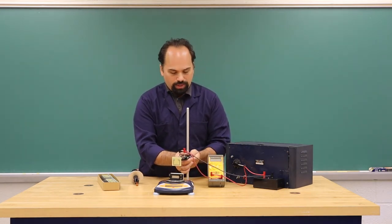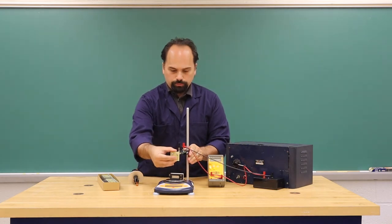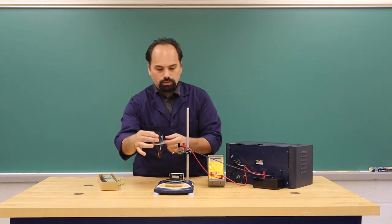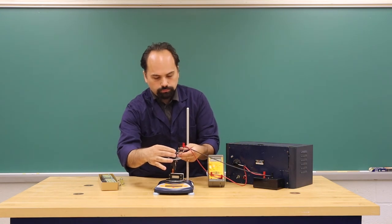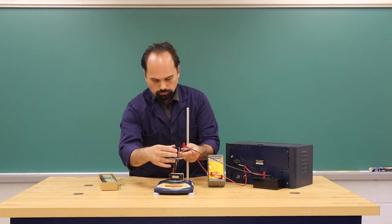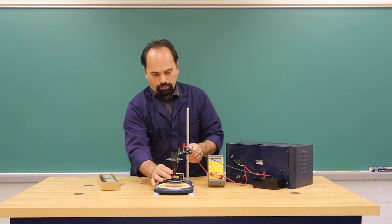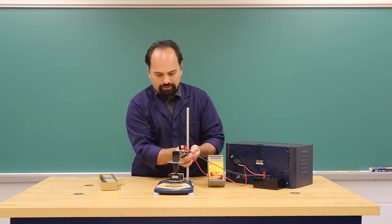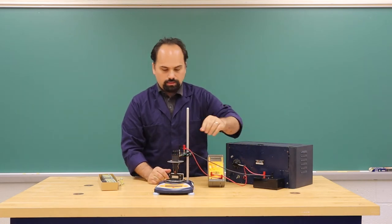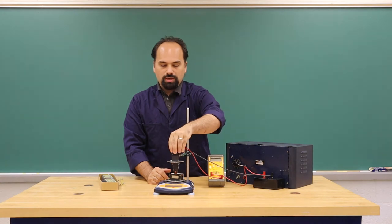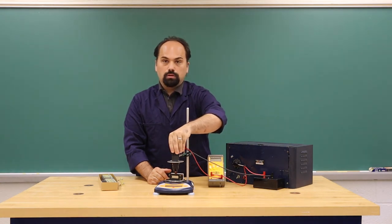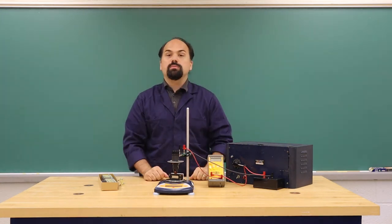And lastly, we can swap out the wire for this adjustable coil. This allows us, at a constant current, to change the angle of the wire relative to the magnetic field.